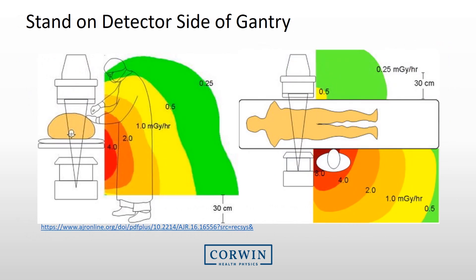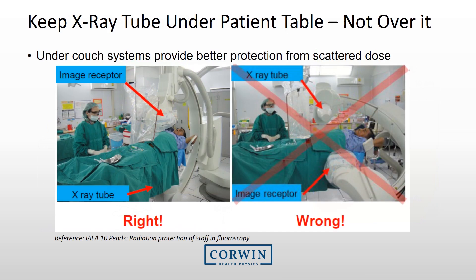This is outlined in the scatter plots on this slide. There are much higher exposure rates on the tube side of the patient than on the detector side. Therefore, it is recommended that the tube always be kept below the patient instead of above. Under-table systems provide better protection from scattered radiation than over-table systems.